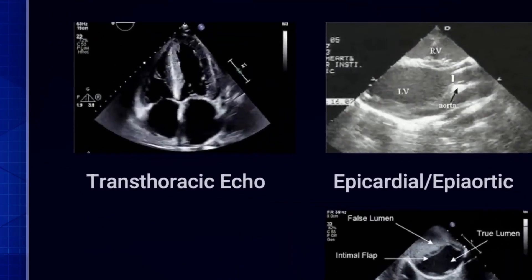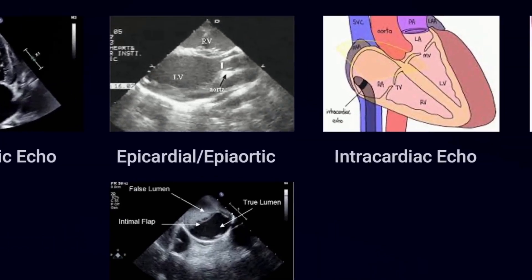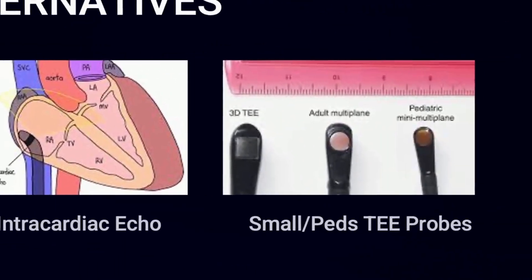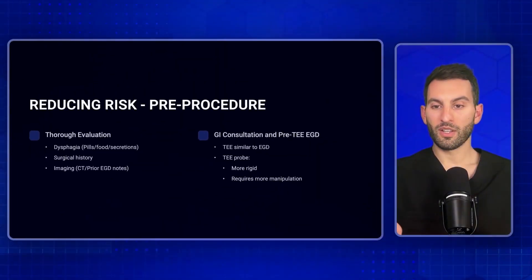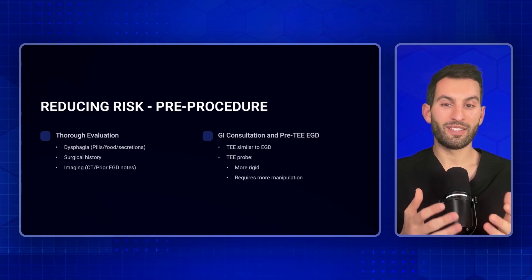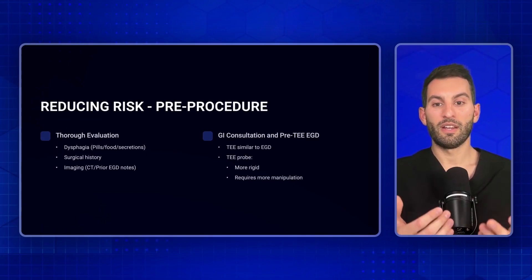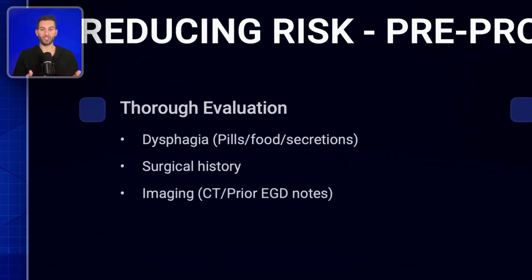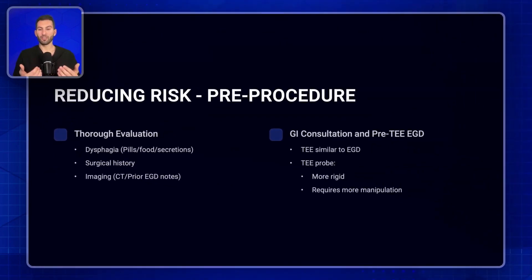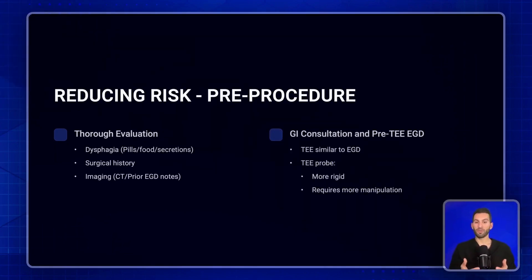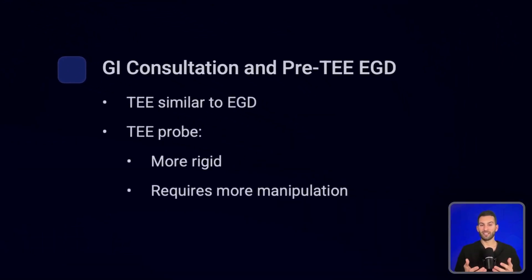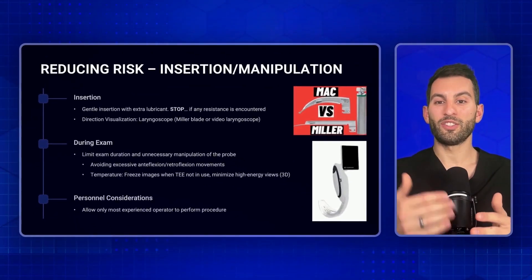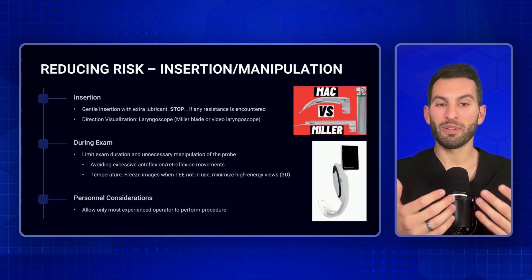Would you use transthoracic echocardiography, epicardial or epiaortic imaging? Would you use ICE in certain clinical scenarios? Or would you use a smaller or pediatric TEE probe? Before the procedure, a thorough evaluation is always important. Ask about dysphagia — to pills, to food, to secretions — as this can delineate minor from major problems. Ask about surgical history and look for old EGD notes. A GI consultation and considering a pre-TEE EGD is a major tool to have in your back pocket.